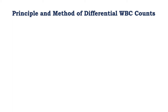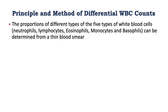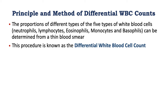The principle and method of doing the differential white blood cell count: the proportions of the five different types of white blood cells — eosinophils, lymphocytes, neutrophils, monocytes, and basophils — can be determined from a thin blood smear. We saw previously in lecture series two how to make thin blood smears, and in lecture series one how to identify and differentiate the different blood cells. This procedure is known as the differential white blood cell count.